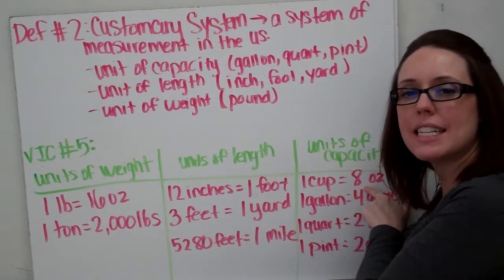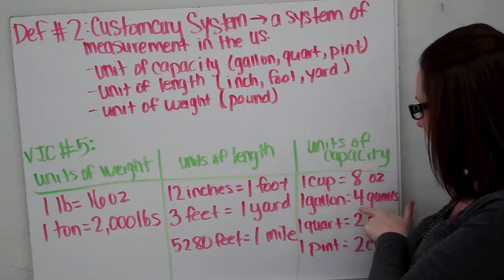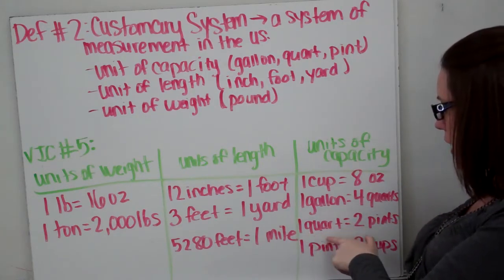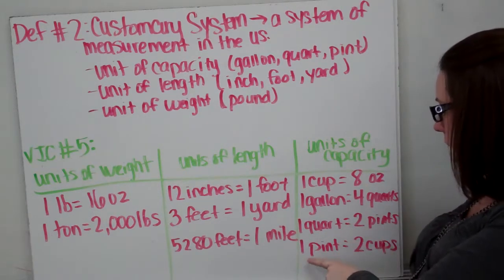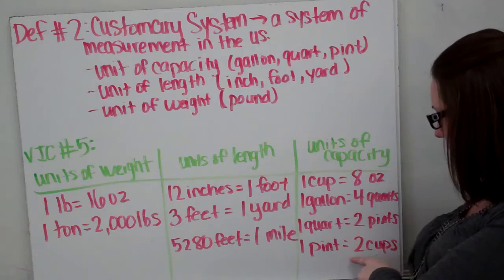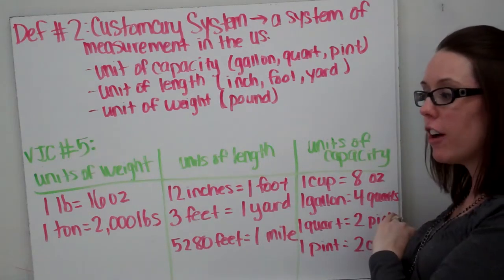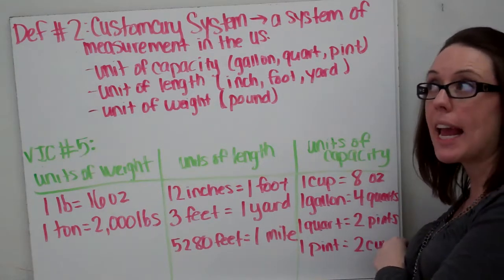Units of capacity: one cup is eight ounces. One gallon is four quarts. One quart is two pints. And one pint is two cups. So if you're ever in the kitchen cooking, those will come in handy.